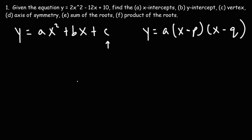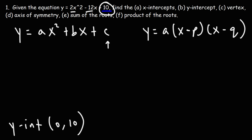Looking at the value of c, that's equal to 10, so automatically we know the y-intercept is (0, 10). Anytime you want to find the y-intercept, set x equal to 0 and solve for y. If you plug in 0 for x into this equation, you're going to get y = 10 — so that's the y-intercept, (0, 10).